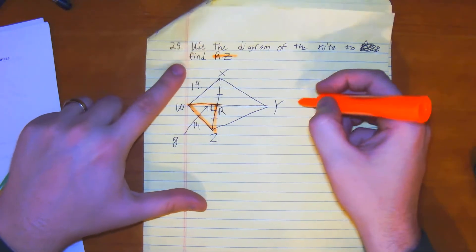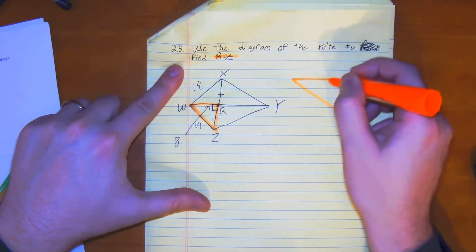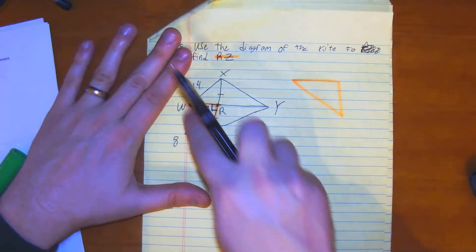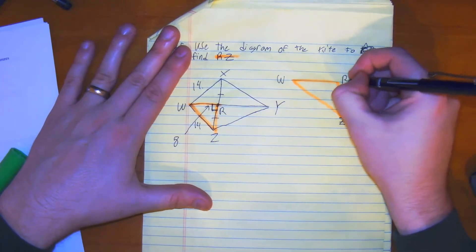So we can just redraw this right triangle over here. So we can see how we're going to do this Pythagorean Theorem. And that is our right angle. W is right here. Z is right here. Then we have R right here.